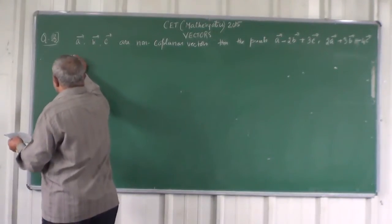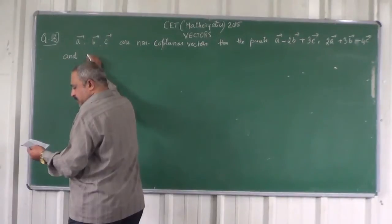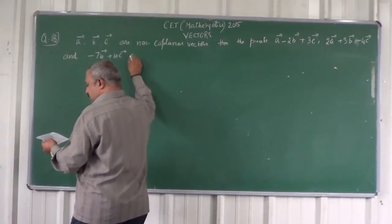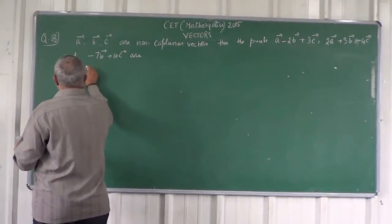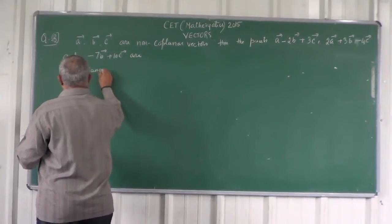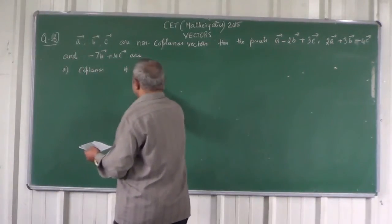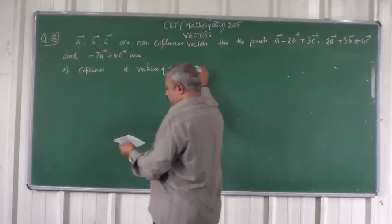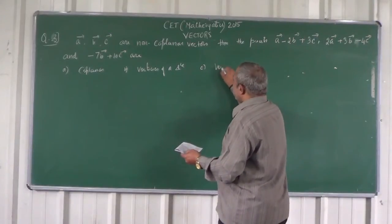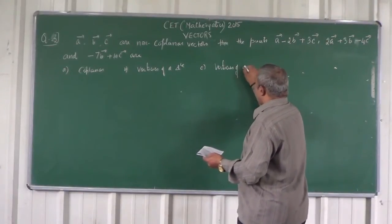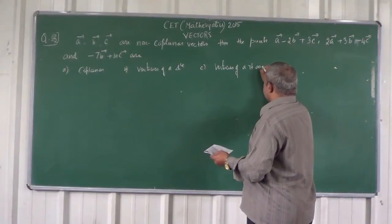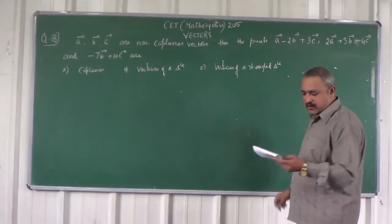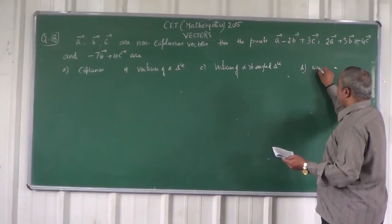and minus 7B vector plus 10C. The options are: A — collinear, B — vertices of a triangle, C — vertices of a right-angled triangle, D — none of these.